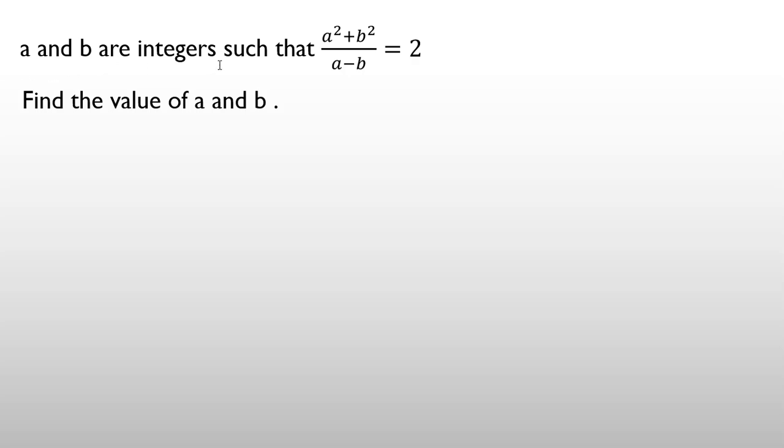a and b are integers such that a squared plus b squared over a minus b equals 2. Find the value of a and b.